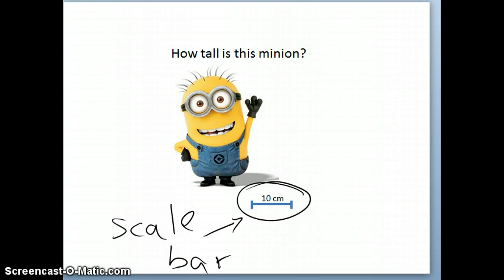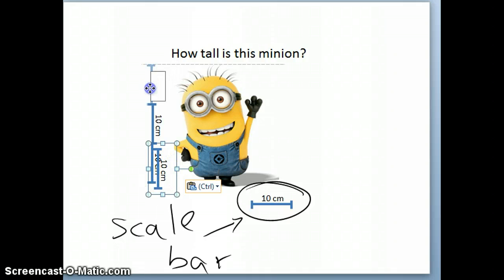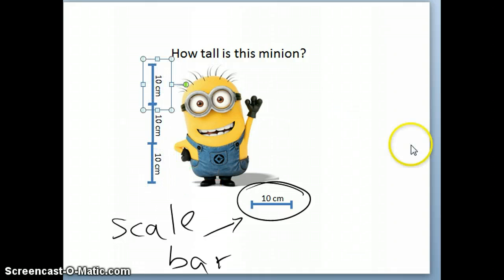So, for example, this ruler here says that this thing from here to here is 10 cm. So, I can literally just stack it up and say, okay, from this point to this point is 10 cm. I'm stacking 10 cm on top of 10 cm on top of another 10 cm. So, I'm guessing that this minion is about 10 plus 10 plus 10, about 30 cm.